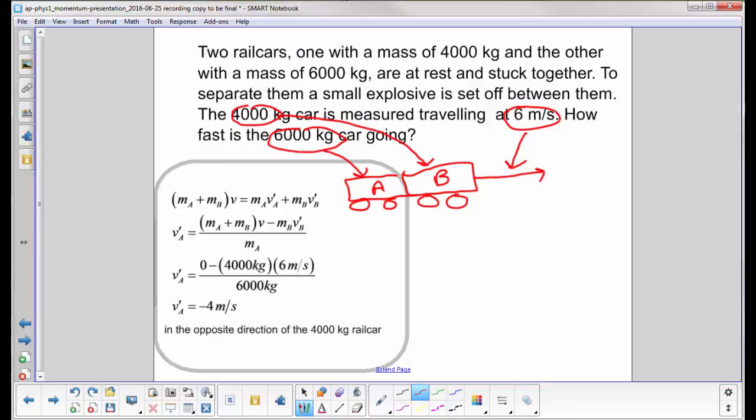That's the opposite direction of the other rail car. So one car moves this way, car A moves the other.